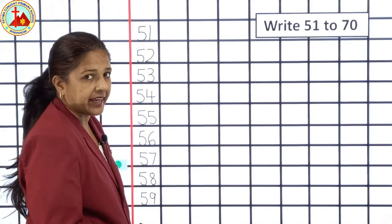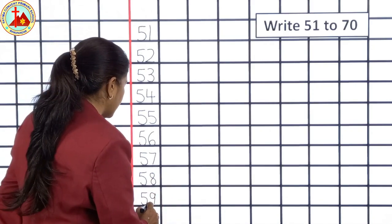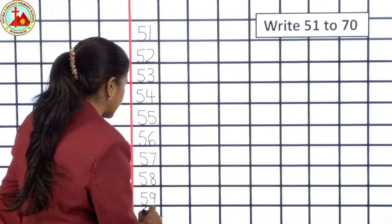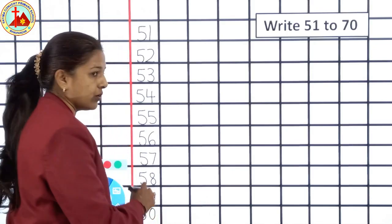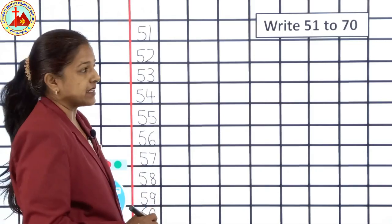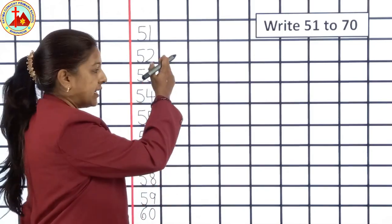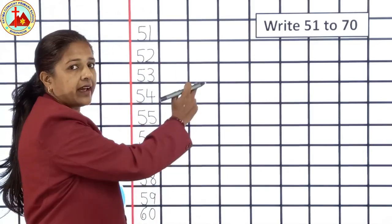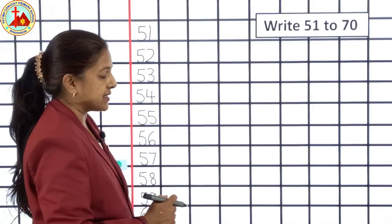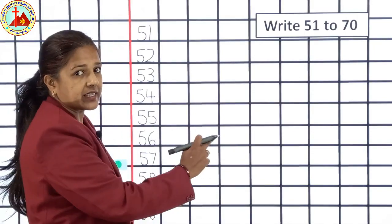After 59, 6, 0, 60. 6, 0, 60. Now, after 60, what you have to do? Leave one line here and write from the next line. 6, 0, 60. Then, here you have to write 6, 1, 61.